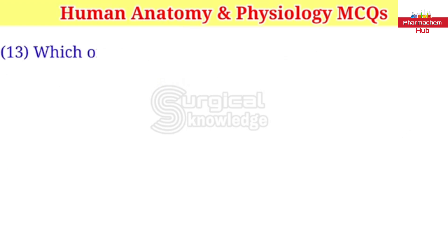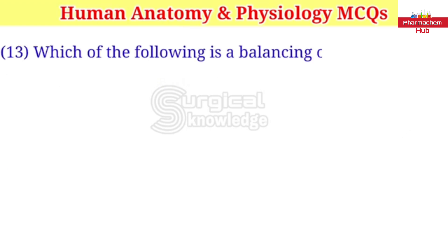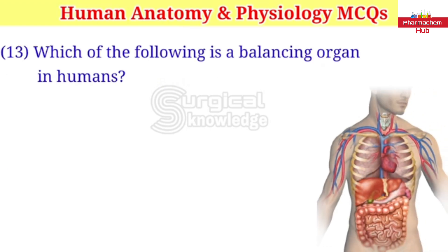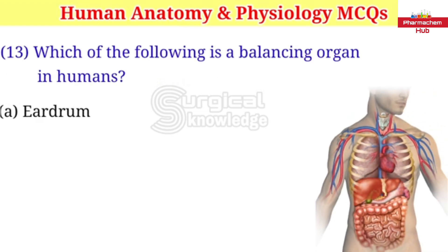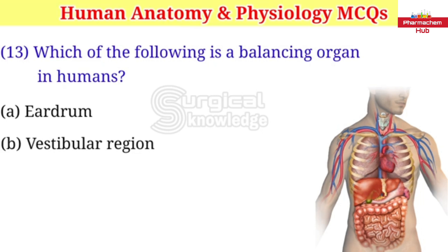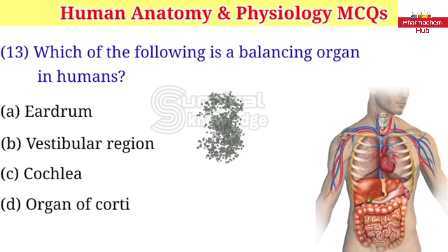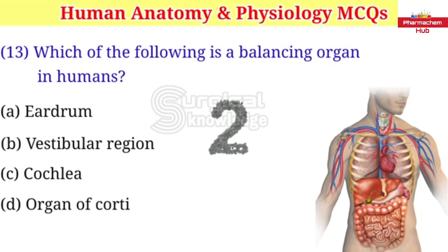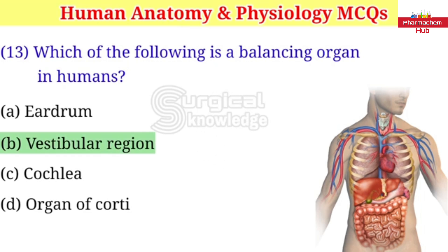Which of the following is a balancing organ in humans? A. Eardrum B. Vestibular region C. Cochlea D. Organ of Corti. Right answer is vestibular region.